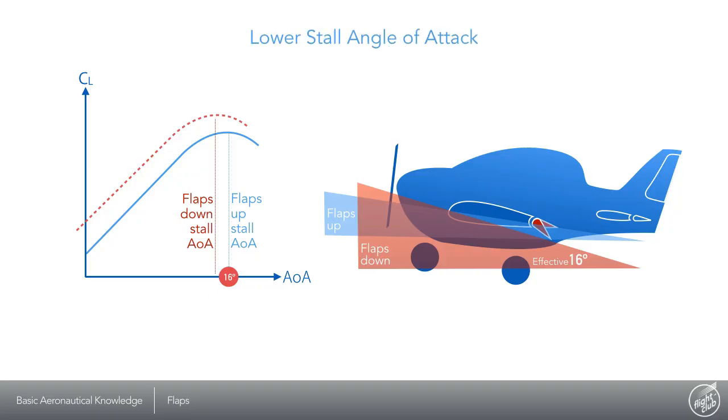The flaps down configuration assumes an effective angle of attack that is relatively larger than the actual flaps up angle of attack. So the airplane will stall at a lower nose attitude with flaps down compared with flaps up.